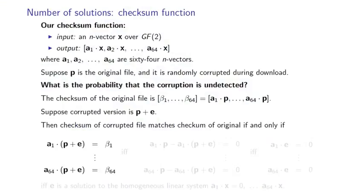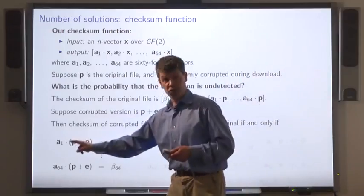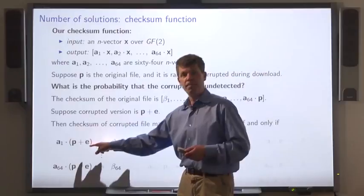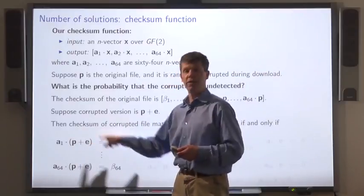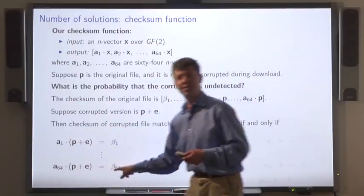Then the checksum of the corrupted file matches the checksum of the original file if and only if the first bit matches, a1 dot p plus e equals beta 1, the second matches, and so on, down to the 64th.